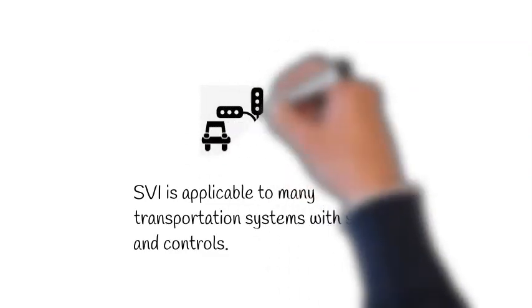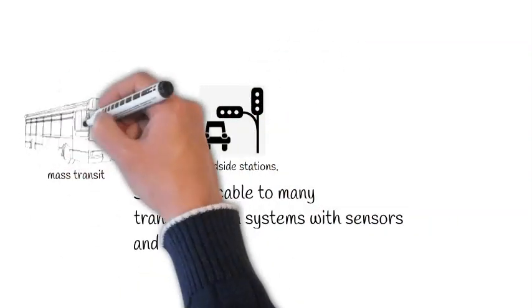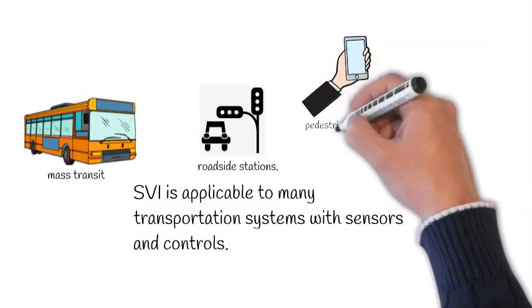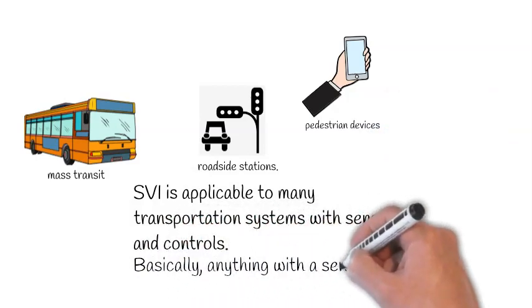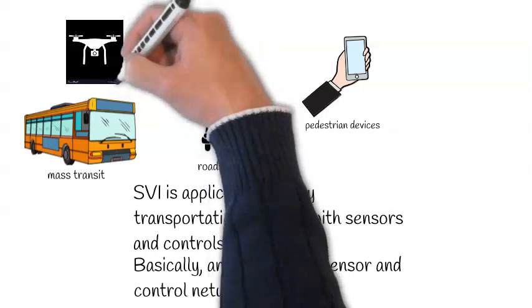SVI is applicable to many transportation systems with sensors and controls. Basically, anything with a sensor and control network, including IoT devices.